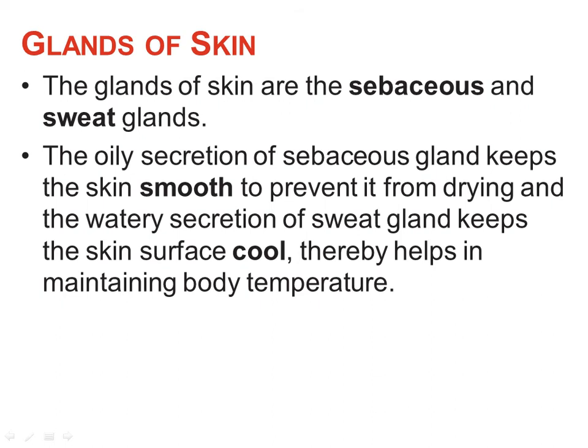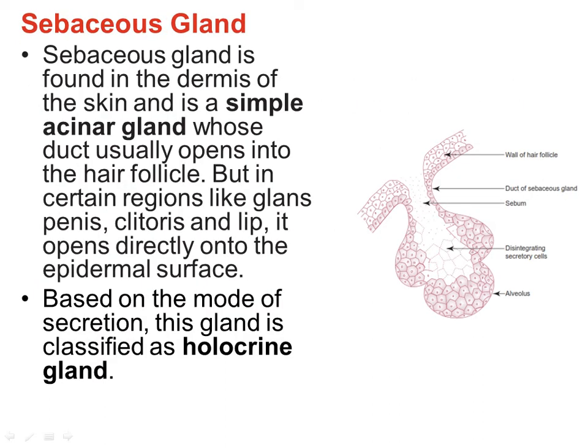The glands of the skin include sebaceous glands and sweat glands. Sebaceous glands produce oily secretions that keep the skin smooth and prevent drying, while sweat gland secretions keep the skin surface cool and help maintain body temperature. Sebaceous glands are found in the dermis; they are simple acinar glands with one duct in the secretory portion, flask-shaped, and the duct opens into the hair follicle. In certain regions like the glans penis, clitoris, and lips, the duct opens directly onto the epidermal surface. The mode of secretion classifies this as a holocrine gland.